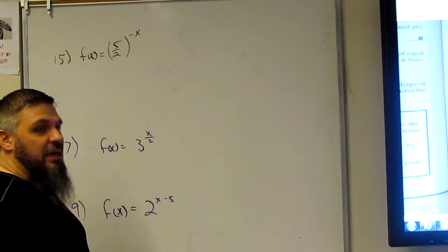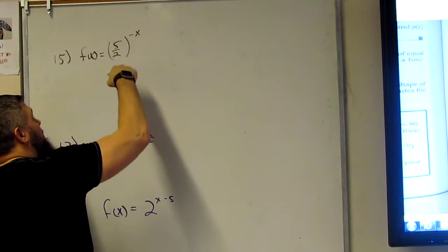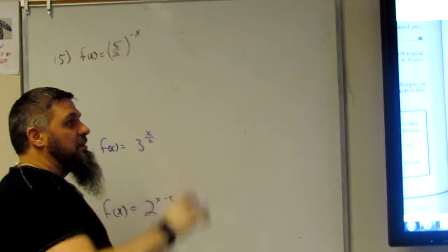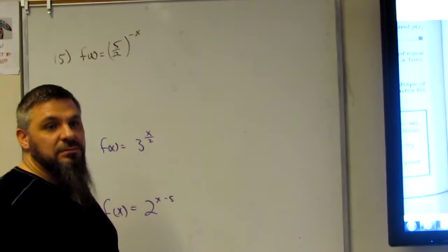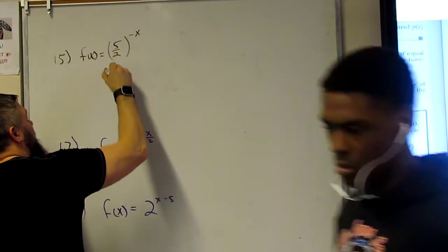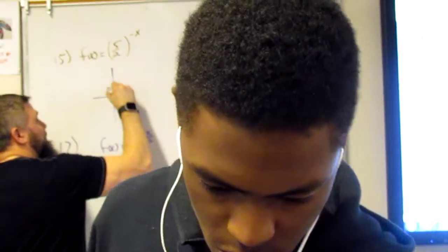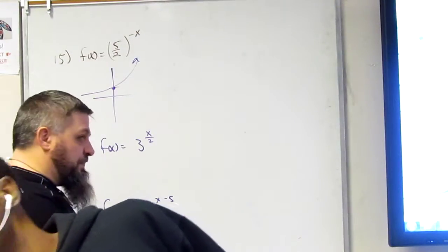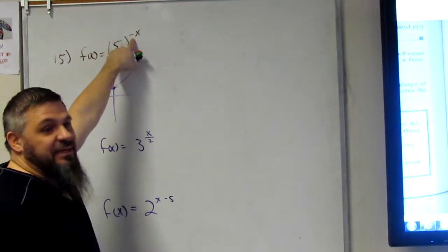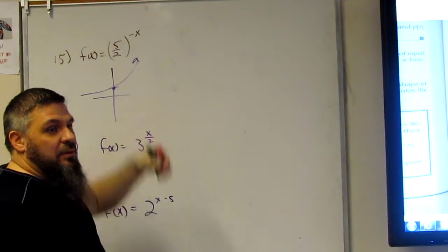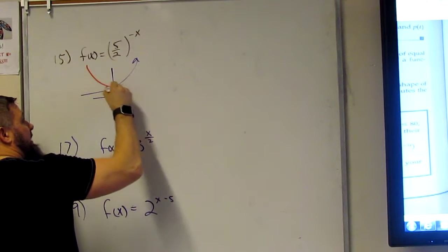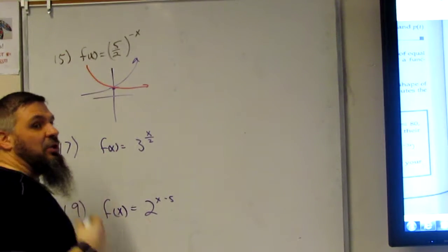Growth, right? So if we remember what growth looks like, it goes from 0 to infinity. So growth should go through 1, and then kind of look like this. Now, with the x being negative, that means that this is going to look like this, isn't it? And it will look like decay.